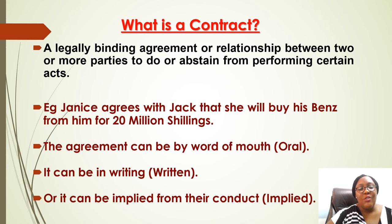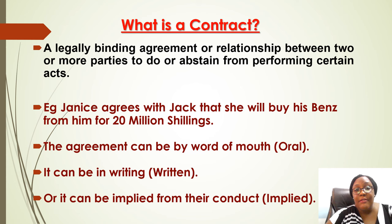So what is a contract? A contract is anything that you agree to — anything that is legally binding. It's a relationship, something you talk about and agree to, and intend to be held by. For example, Janice can agree with Jack that she's going to buy Jack's car for 20 million shillings. They intend to be bound by what they are saying — that is a contract, to be enforced in law.